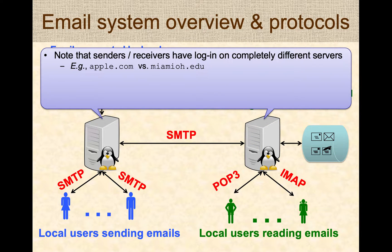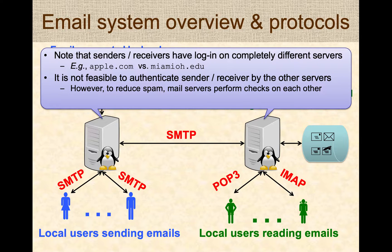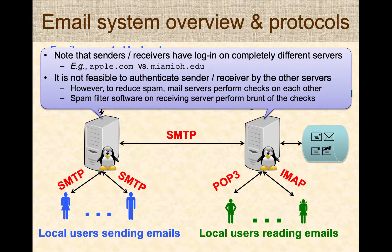Note that senders and receivers have logins on completely different servers — a sender could be at apple.com, a receiver at miamioh.edu. So it's not really possible to fully authenticate the sender, because we don't have access to their credentials on the other server. To reduce spam, mail servers do perform some basic checks on each other, and it's the spam filter software on the receiving server that performs most checks to detect spam or phishing emails.